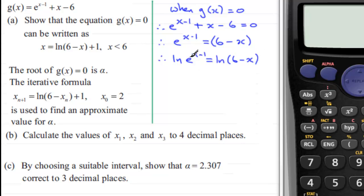Now I can use the power law for logs, and that is that I can bring x minus 1 to the front of the natural log of e. And this is going to be equal to the natural log of 6 minus x.